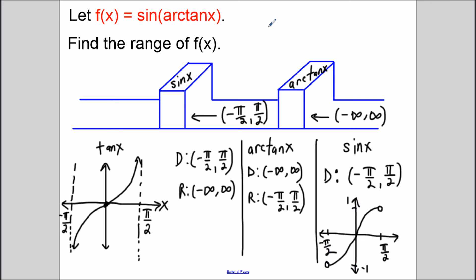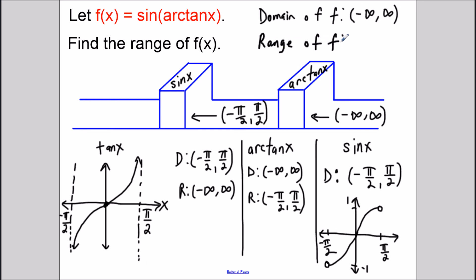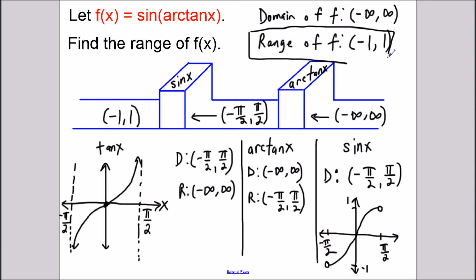The domain of f can send any value we want, going from negative infinity to infinity. The range of f — looking at this final graph — is going to give us y values from negative 1 to 1. So the range of f of x is the open interval from negative 1 to 1. This concludes the video on finding the domain and range of a composition function. Thank you all for watching, and I hope this was helpful.